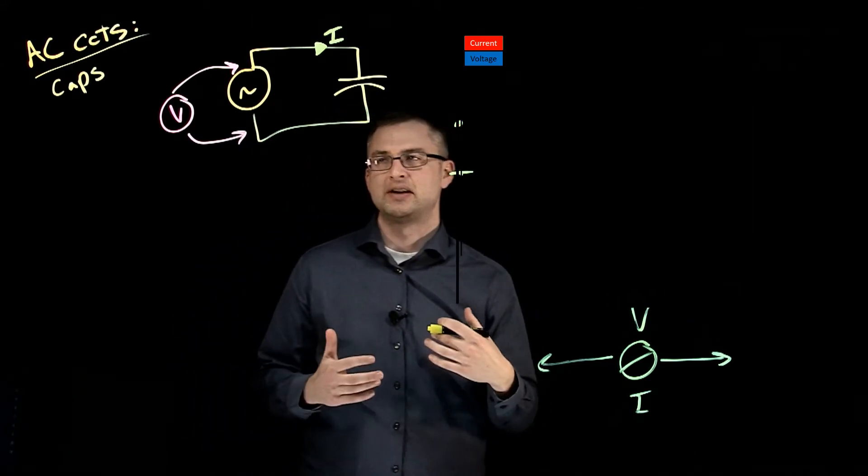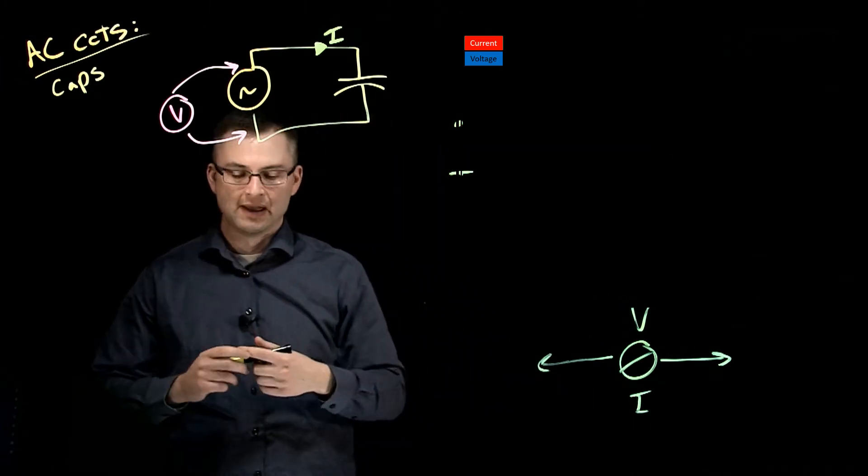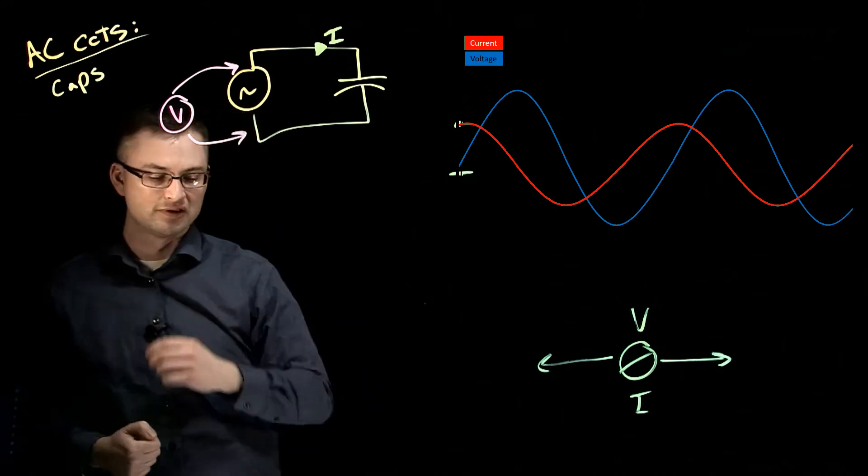So that's what's interesting about a capacitive circuit in AC, is that voltage and current aren't aligned with each other. We actually have full current coming out of that capacitor when the source is at zero volts.